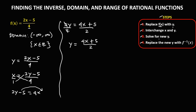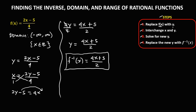Replace the new y with f inverse of x. So f⁻¹(x) equals 4x plus 5 over 2 — this is the inverse of the given rational function. Then to find the range from the inverse, since there is no variable in the denominator, the range is from negative infinity to positive infinity, or the set of all real numbers.